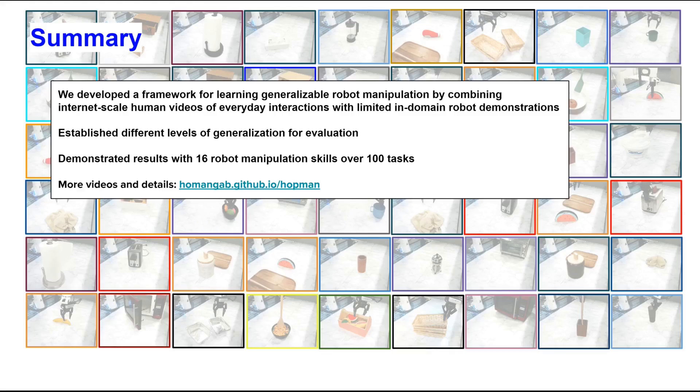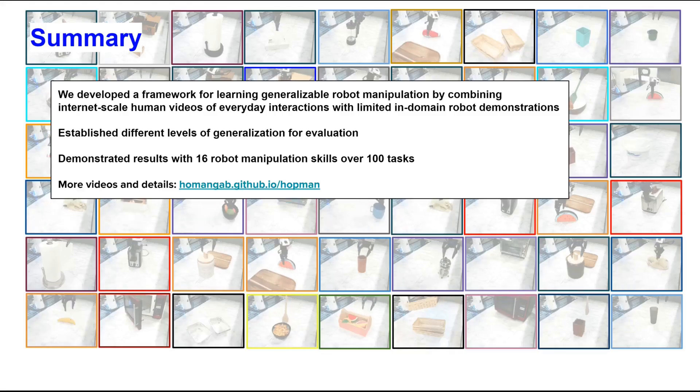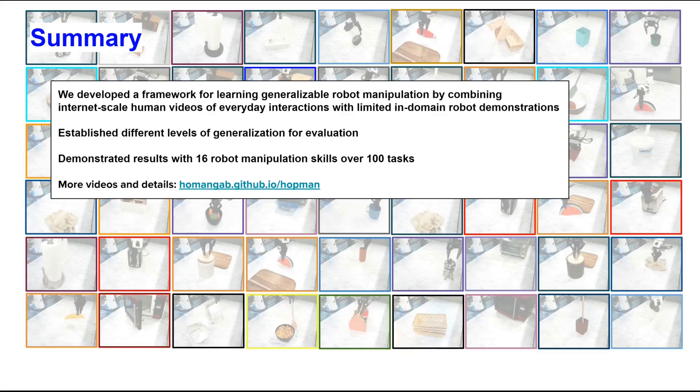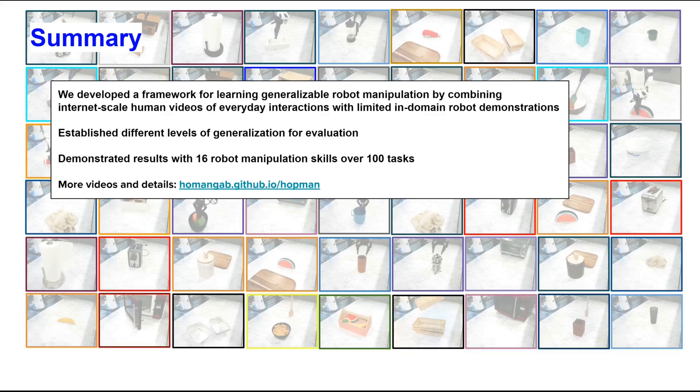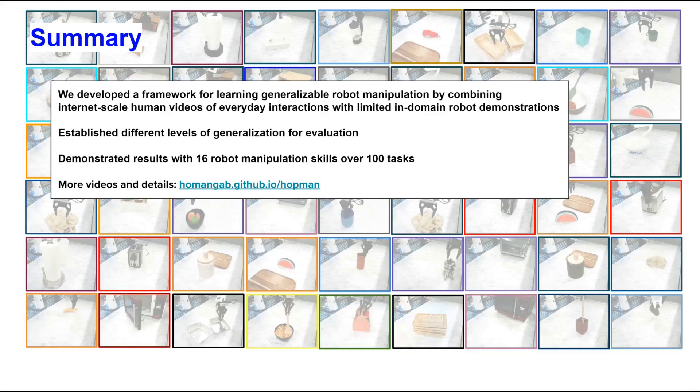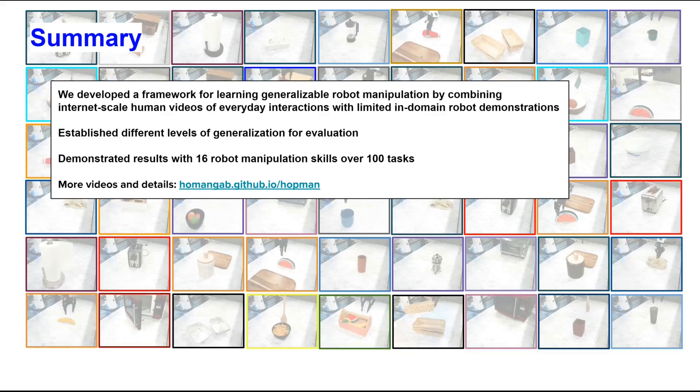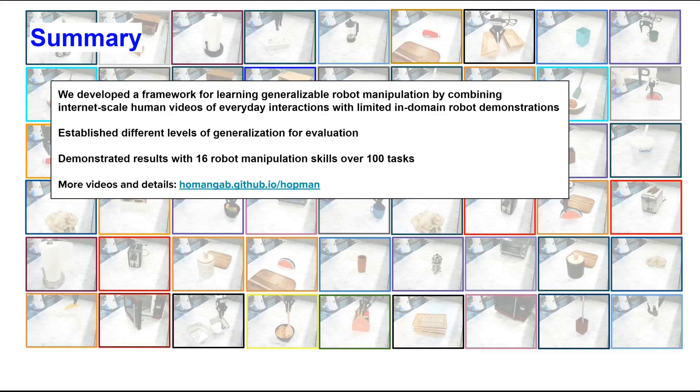In summary, we developed a framework for learning generalizable robot manipulation by combining internet-scale human videos of everyday interactions with limited in-domain robot data. We established different levels of generalization for evaluation and demonstrated results for over 100 tasks involving 16 skills. For more videos, please refer to the website.